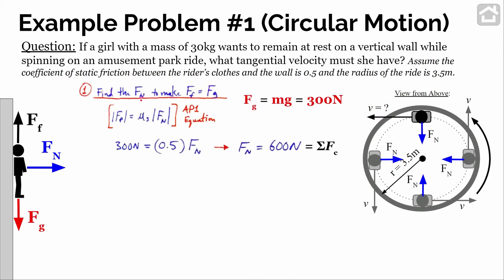The first step is to find how big the normal force needs to be so that the frictional force equals gravity. Using the friction equation, the frictional force equals the coefficient of static friction times the normal force. We want friction to equal gravity, and for a 30 kilogram rider, the gravitational force is 300 newtons. So with a coefficient of static friction of 0.5, we can solve for the needed normal force. It turns out the rider needs a normal force of 600 newtons.